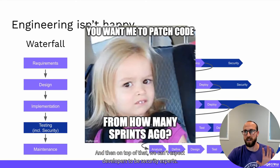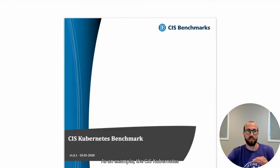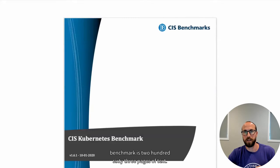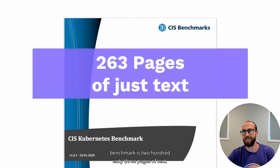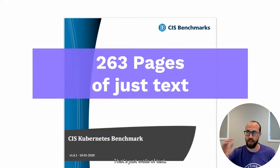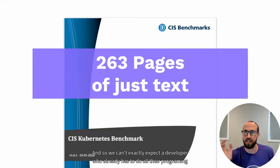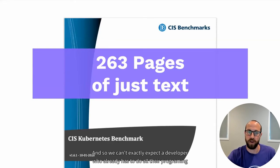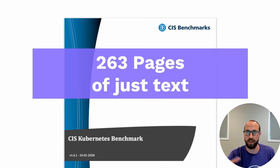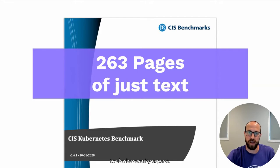So neither party is happy. On top of that, we can't expect developers to be security experts. The CIS Kubernetes benchmark is 263 pages of text — just walls of text. We can't expect a developer who already has to be an expert in their code language, Terraform templates, CloudFormation, or Kubernetes YAMLs to also be a security expert.